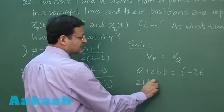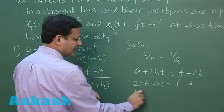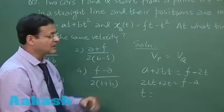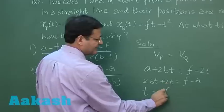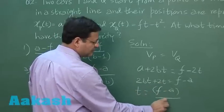So you can write here 2bt plus 2t, this is equal to f minus a. So for that matter, the time when the velocity will be same for P and Q, that will be f minus a upon - you can take 2 common - b plus 1.